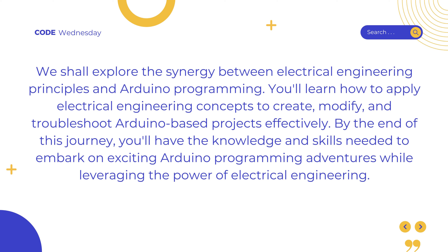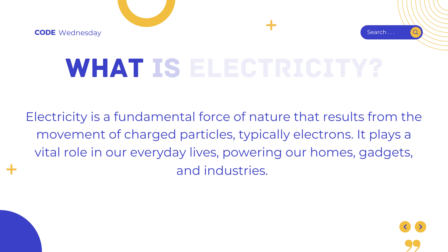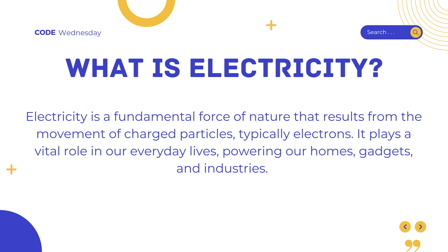Understanding electricity — what is electricity? Electricity is like magic, but it's not really magic. It's a fantastic force of nature — it's what makes the lights in your home turn on, your gadgets work, and so much more. Let's break it down into some simple ideas. Charge — imagine tiny particles called electrons. They have a special property called electric charge. Some electrons have a negative charge, while protons have a positive charge.